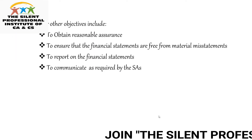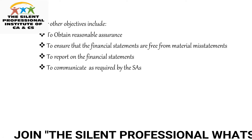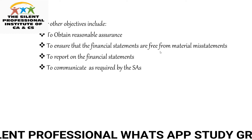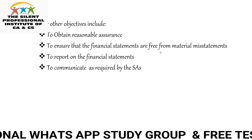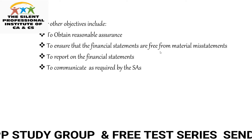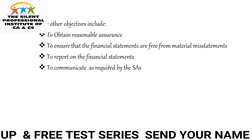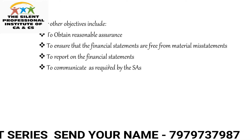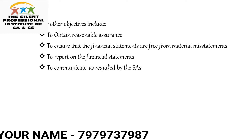Other objectives include obtaining reasonable assurance — when we audit, we go through our processes in order to obtain reasonable assurance that the financial statements are free from any kind of material misstatements. 'Material' means any information which may hamper decision-making. We also have to report on the financial statements and comply with legal and regulatory requirements whichever are applicable to the company.